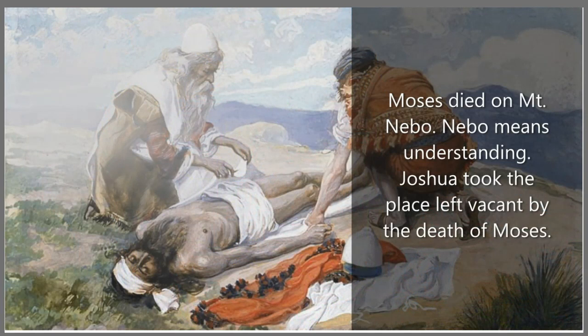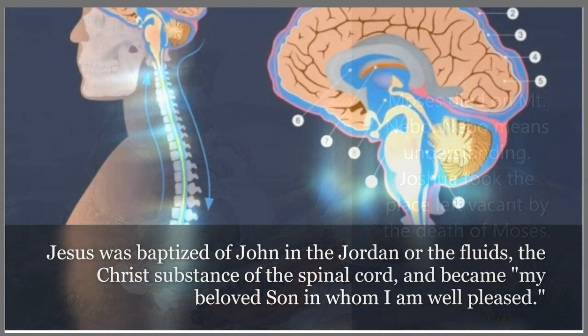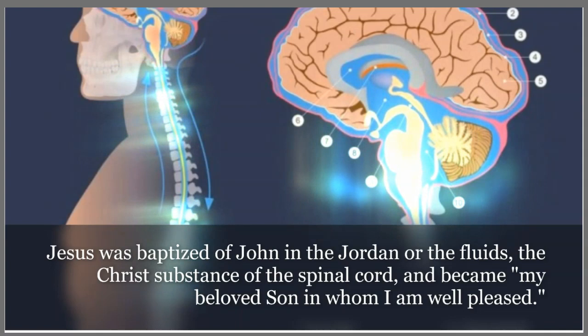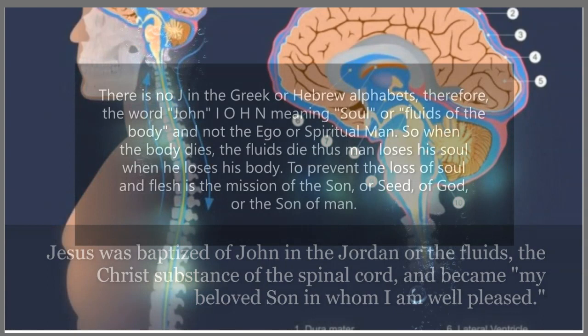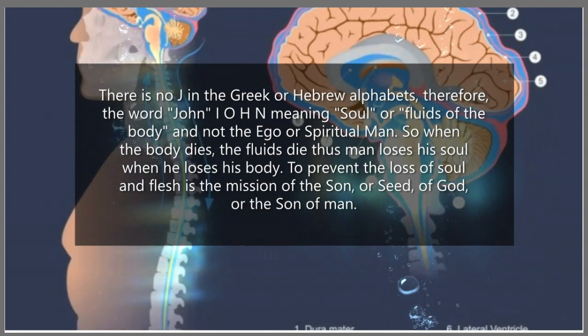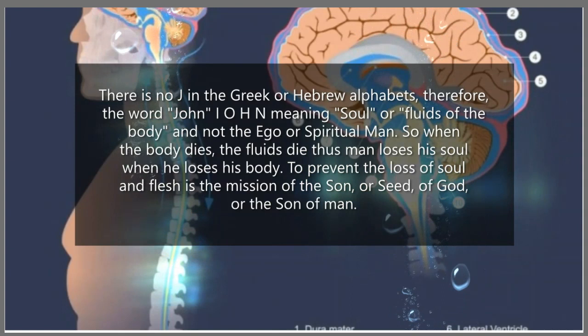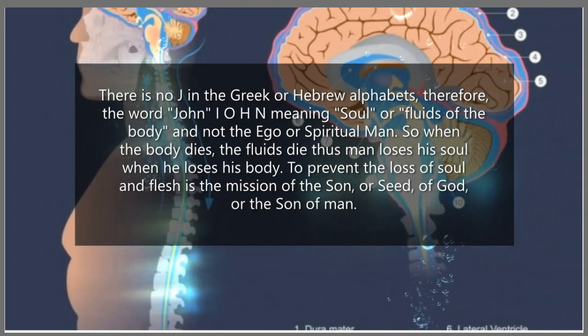Moses died on Mount Nebo, and Nebo means understanding. Joshua took the place left vacant by the death of Moses. Jesus was baptized of John in the Jordan, or in the fluids — the Christ substance of the spinal cord — and became "my beloved son, in whom I am well pleased." There is no J in the Greek or Hebrew alphabets. Therefore, the word John, or I-O-H-N, meaning "soul, or fluids of the body," and not ego, or spiritual man.